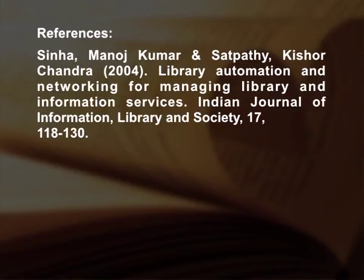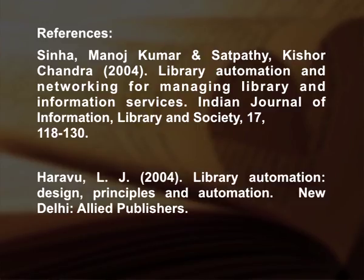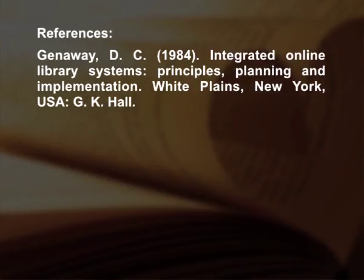The books for your reference are: 'Library Automation and Networking for Managing Library and Information Automation' written by Manoj Kumar Sinha and Chandra Kishore and Satpati, published in 2004 in the Indian Journal of Information Library; 'Library Automation: Design Principles and Automation' written by L.J. Haravu, 2004, Allied Publishers, New Delhi; and 'Integrated Online Library Systems: Principles, Planning and Implementation' written by D.C. Genoway, 1984, published by G.K. Hall, White Plains, New York, USA.